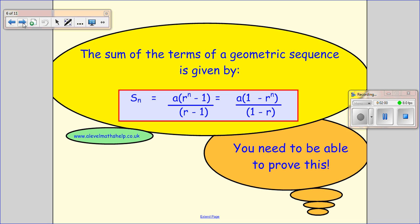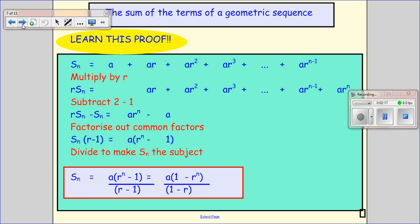Okay, the sum of the terms of a geometric series is given by either of these two formulas. It doesn't matter which one you use. You are actually given all these formulas in the formula booklets. But you do need to be able to prove this. So this is a proof that you do have to learn. It does actually get asked so just be sure that you can trot it out when you need to.